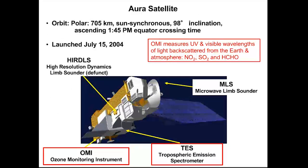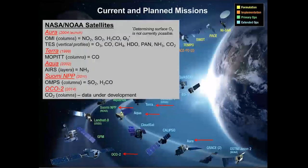Let me talk about two instruments on the Aura satellite. The first is the Ozone Monitoring Instrument, OMI, which is an ultraviolet/visible down-looking imaging spectrograph that measures solar radiation absorbed and scattered by Earth's atmosphere. The second is the Tropospheric Emission Spectrometer, TESS, which is an infrared high-resolution Fourier transform spectrometer that looks at the atmosphere from the side — in limb viewing mode. I've listed these instruments, the satellite they ride on, what they measure, and the units they report.